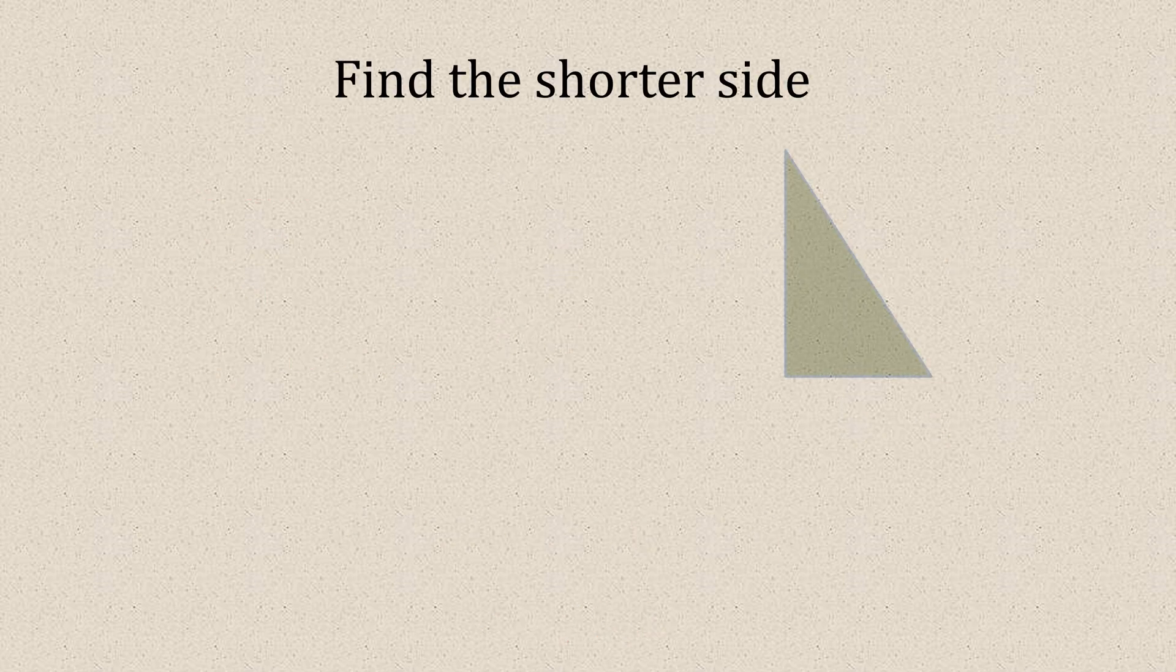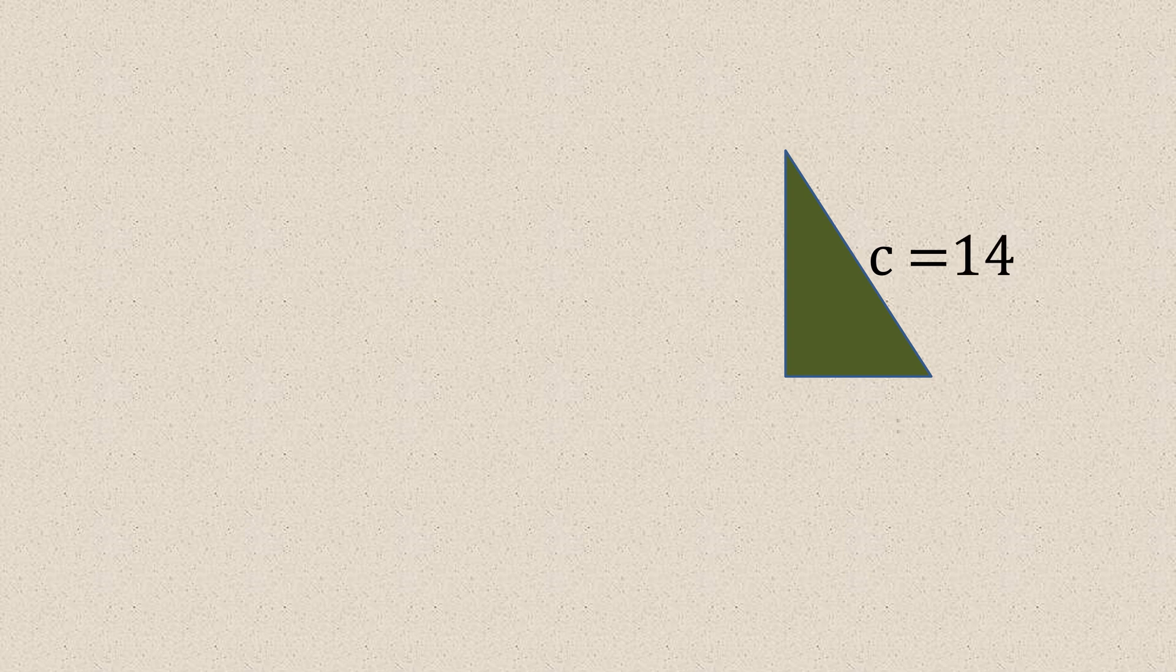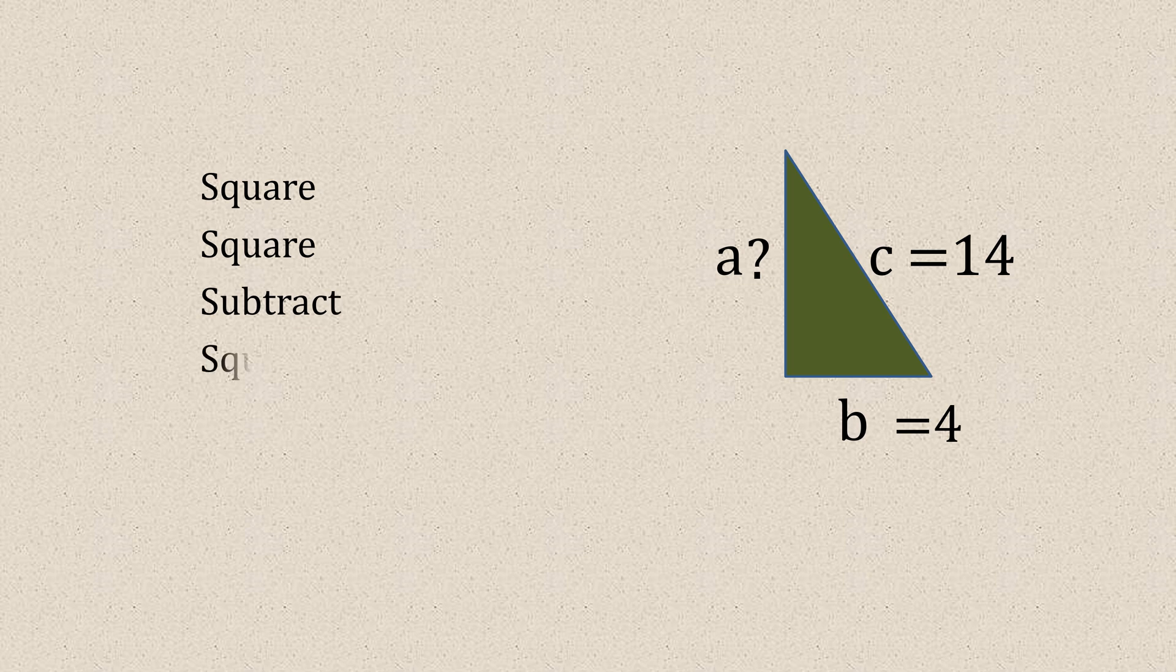You may need to find the shorter side of the right-angled triangle. So what you need to remember here: square, square, subtract, square root.